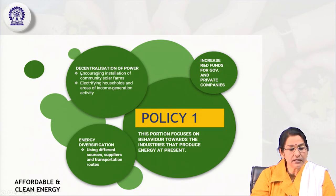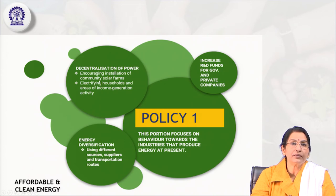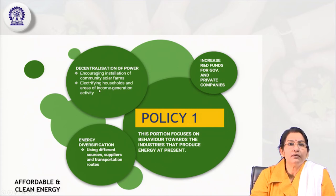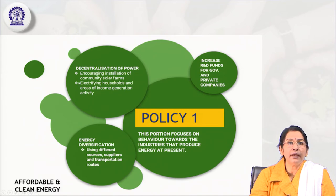Policy 1 recommends decentralization of power by increasing installation of community solar farms in villages, rural areas, blocks, and small towns. These community-based solar farms will take responsibility for not only creating but also maintaining the farms, electrifying households, and becoming a source of income generation for local people — giving communities responsibility and access to manage solar farms installed in rural and small-town areas.